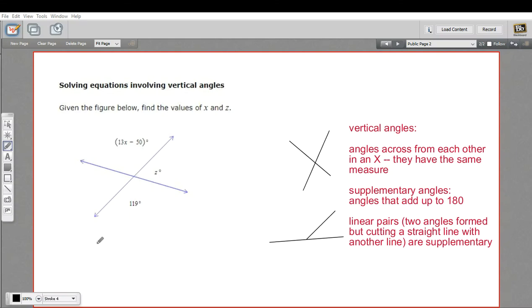In this problem, we have two straight lines intersecting each other, and we've got some variables and some number expressions here, and our job is to find out the values of x and z, the variables in this figure.